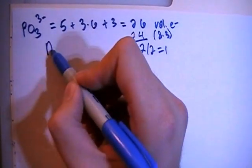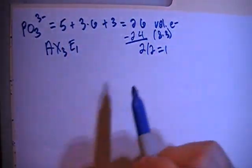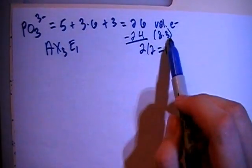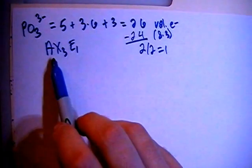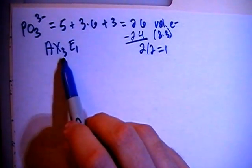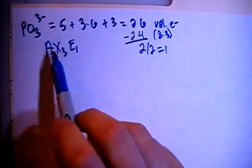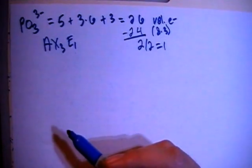So that means this shape is going to be an AX3E1 figure meaning this 3 comes from here and this 1 comes from here. That means you have the central atom, phosphorus, surrounded by 3 peripheral atoms, each oxygen, and then there's also 1 non-bonding pair of electrons on the central atom, on the phosphorus.